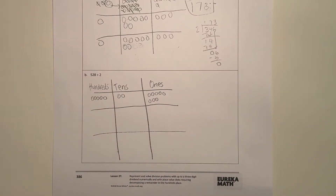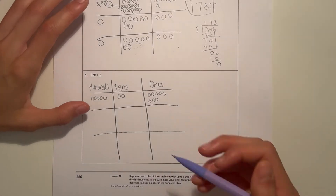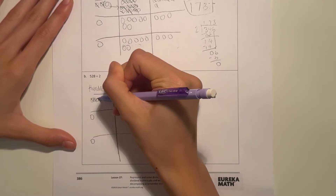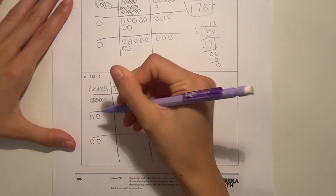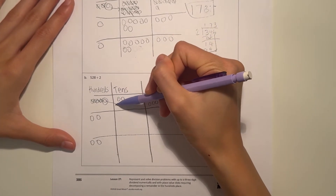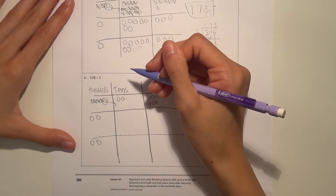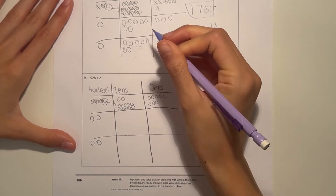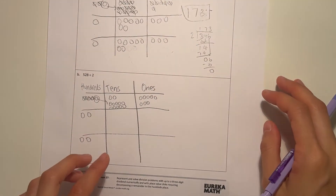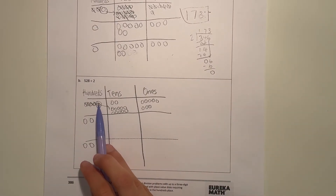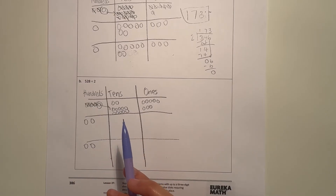So first we look at the hundreds, and make sure there's an equal amount of disks in each of the two groups. We have one left over, so that's not enough. So what we do is we take this, and it becomes ten tens — because since we're moving down to the place value to the right, one of these will become ten of these.